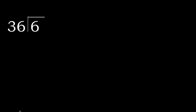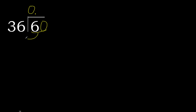6 divided by 36. 6 is less, therefore complete — always complete with 0. Therefore here 0 point 60 is not less, therefore work with 60.